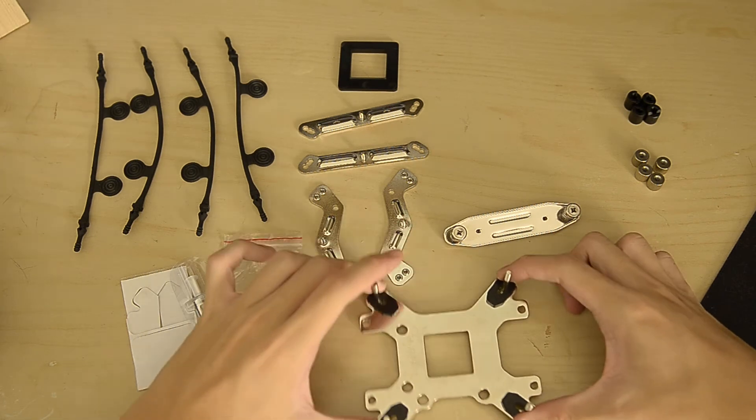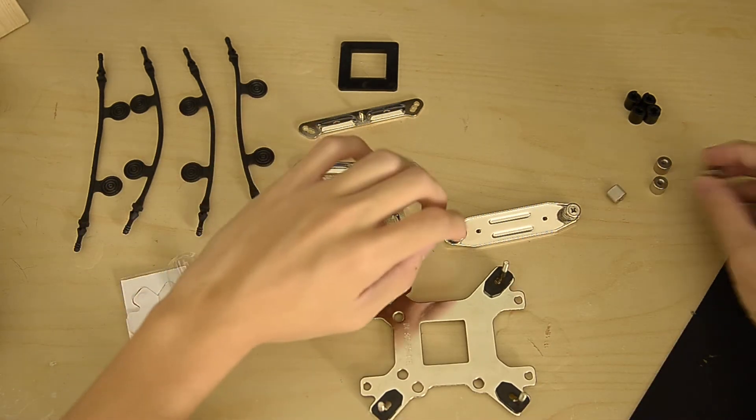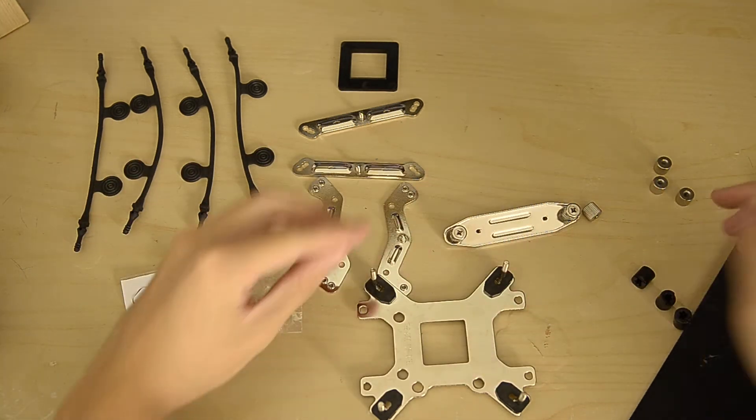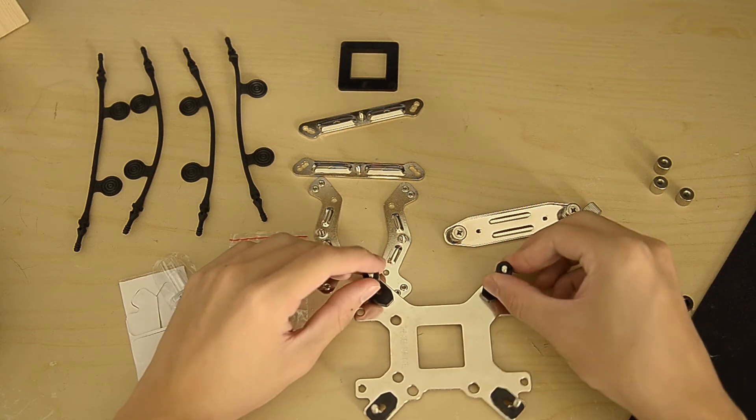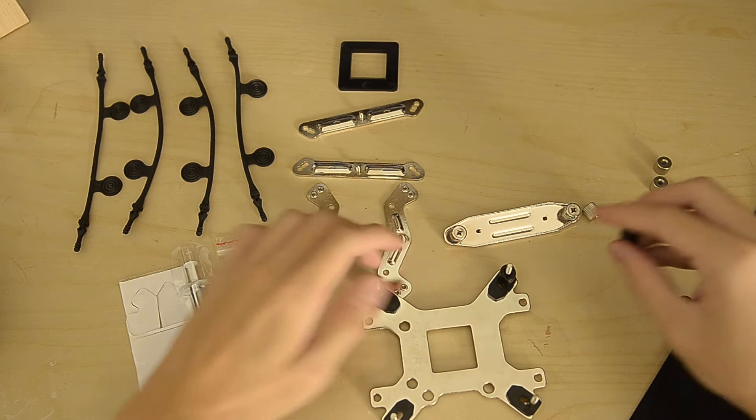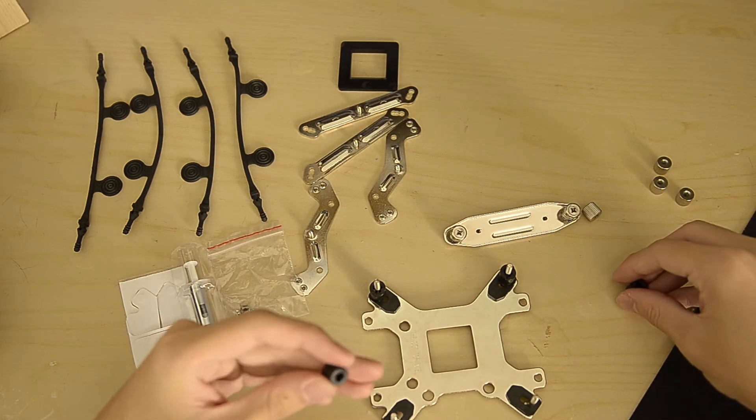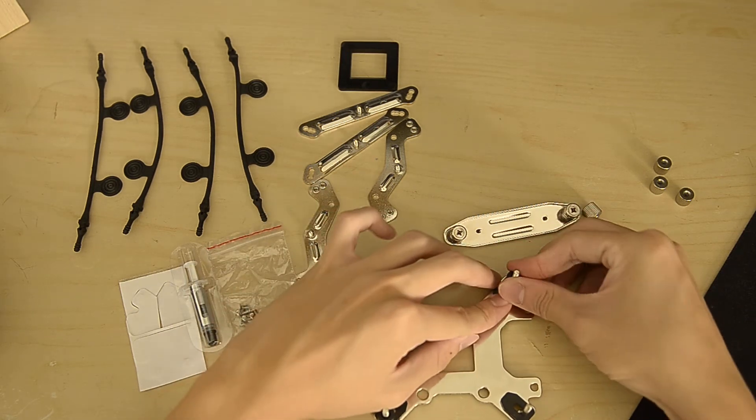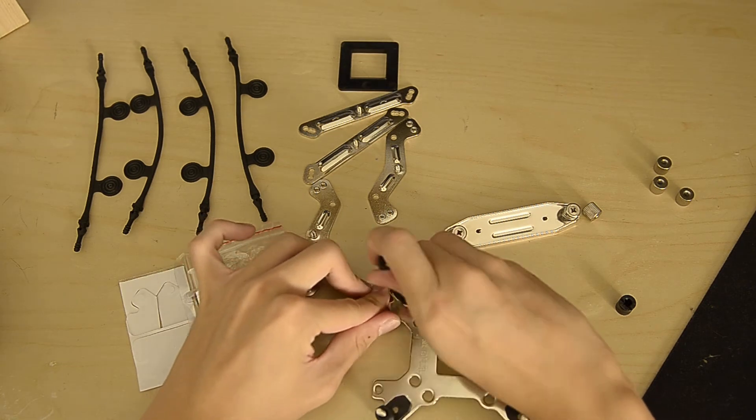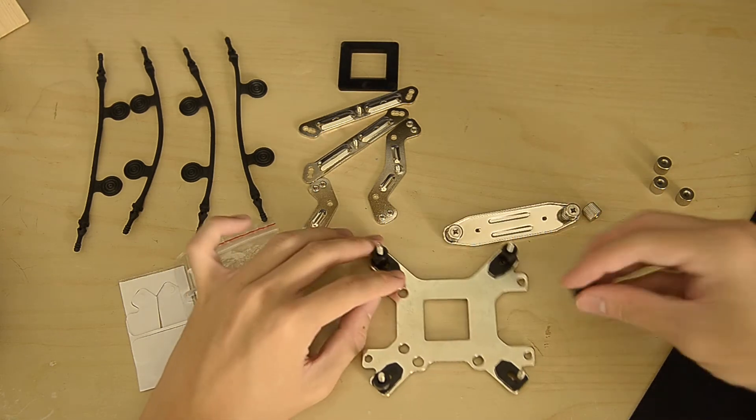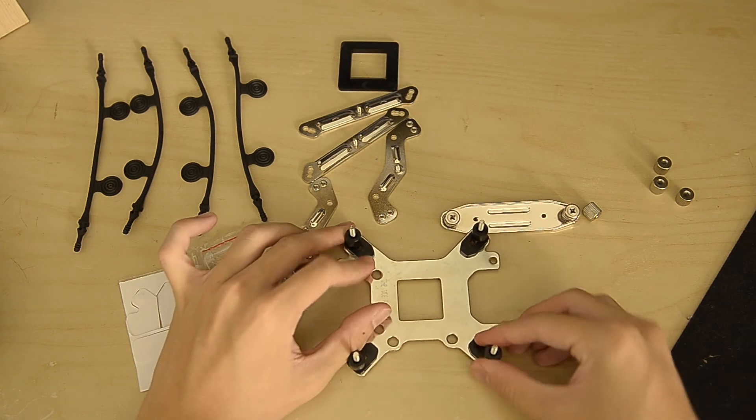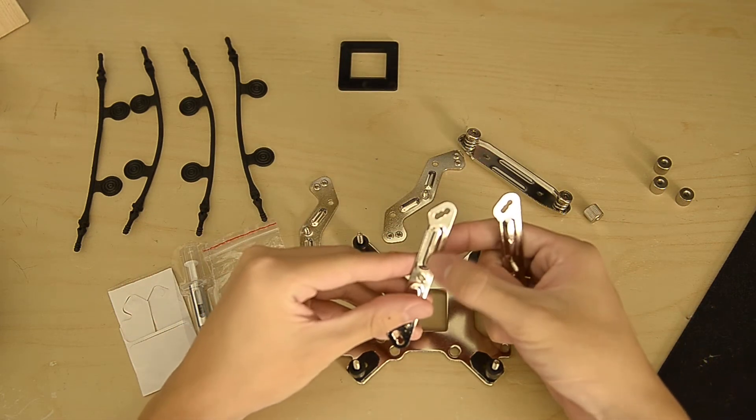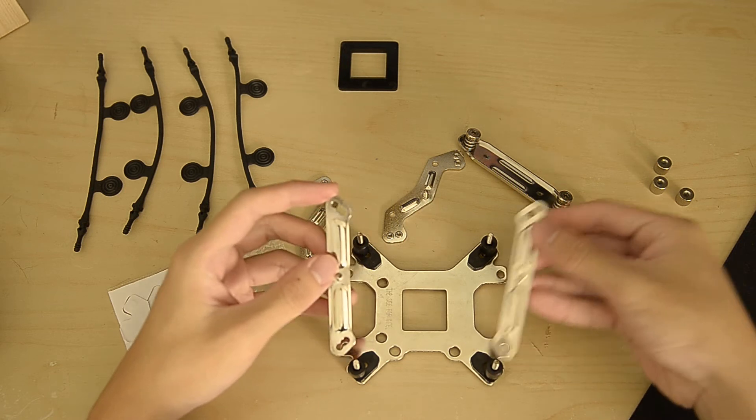So you have these screws protruding out. What you do next is basically just pop this in. When this is at the back of the motherboard, and then what you're going to do next is have this plate with the arrows indicated here to go in accordingly.